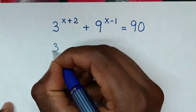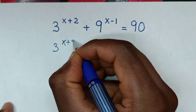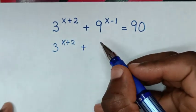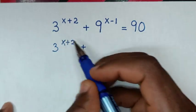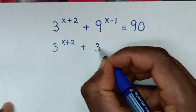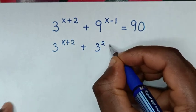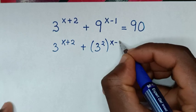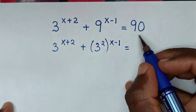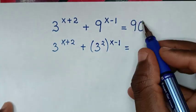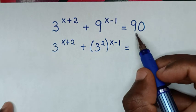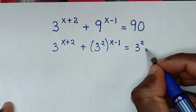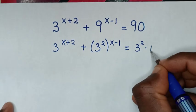It will be 3 power of x plus 2 plus 9 power of x minus 1 is equal to 90. To have a common base of 3, 9 is the same as 3 squared. And 90 is the same as 3 squared times 10.